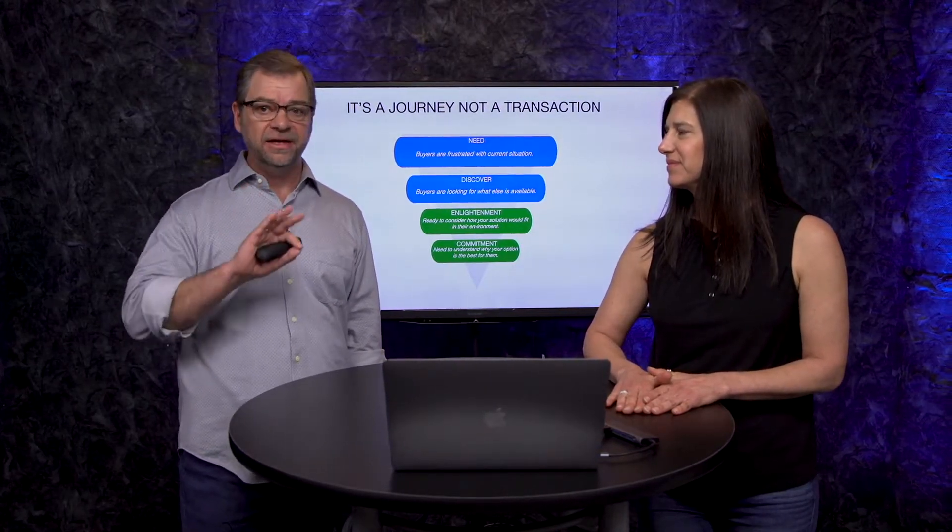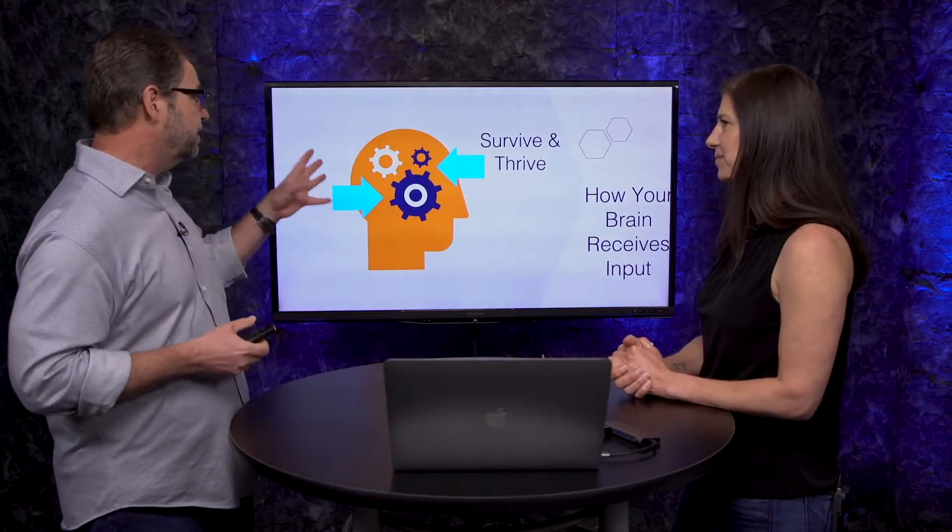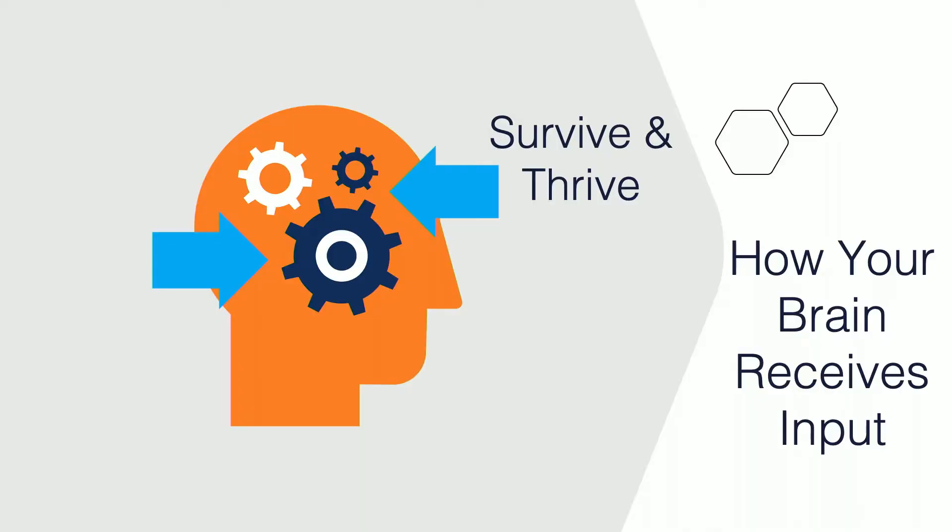When we think about getting our heads around our buyer, we need to think about them in the context of these four phases of the buyer journey. But we also need to look at how our brains work. If we can understand what's really driving every human out there and communicate to those innate desires, we'll be in a great position to position our products as a solution. There are really two things every one of us is trying to accomplish — the first, believe it or not, is survive and thrive.